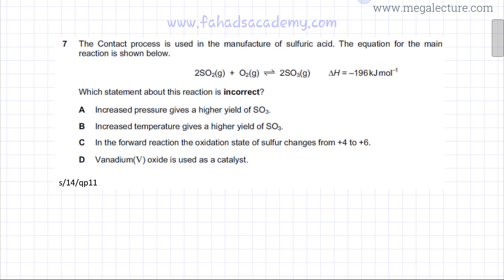The first statement reads that increased pressure gives a higher yield of SO₃. Now remember that if you increase pressure then the side with less gas moles is going to be favored. The reason is if you are increasing pressure you are compressing it, so lesser amount of gas would be produced.